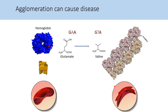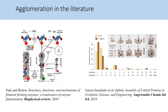The agglomerate deforms the red blood cell into a sickle, which causes the disease. For an overview of agglomeration, I would like to highlight two recent reviews. The first, by Nancy Horton and Chad Park, provides an exhaustive description of known proteins forming agglomerates. The other is from our group. It highlights the importance of protein symmetry in driving agglomeration and also explains why the term agglomeration is helpful, as opposed to using polymerization, for example.